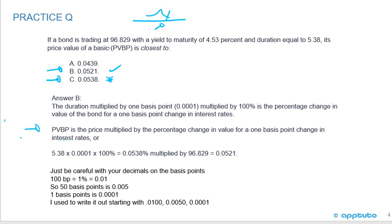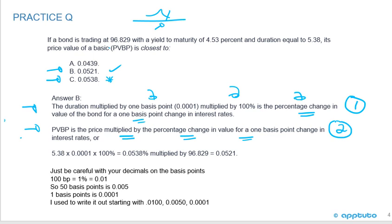The price value of a basis point is: price multiplied by the percentage change in value for a one basis point change in interest rates. The duration multiplied by one basis point multiplied by 100% gives the percentage change. So step one: calculate the percentage change in value of the bond. Step two: the PVBP is the price multiplied by that percentage change. C is the percentage change; B is the change in price — that's the PVBP.